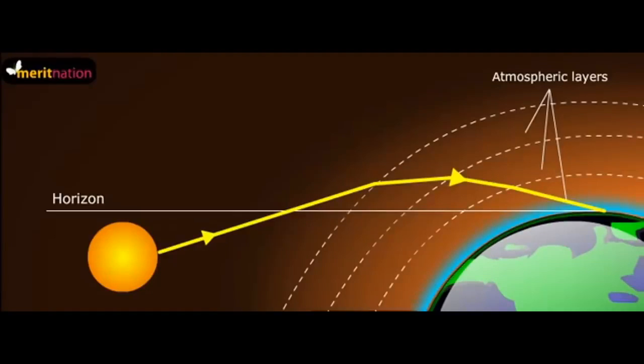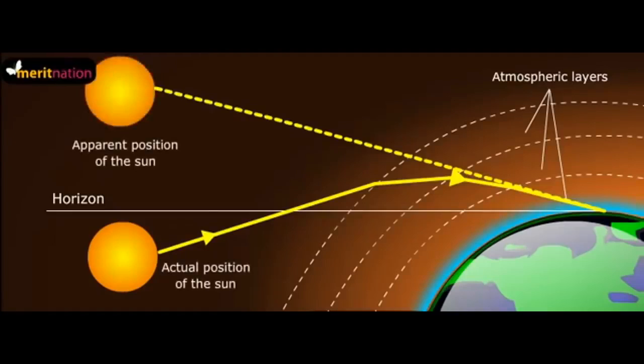Now here comes the part that is counterintuitive. The light rays are bending down, but this makes things actually appear higher than they are, not lower. Think about it. The light is bending down toward the Earth. So when we look at that light, it looks like it's coming from a higher point than it is. So it appears higher above the horizon than it is.